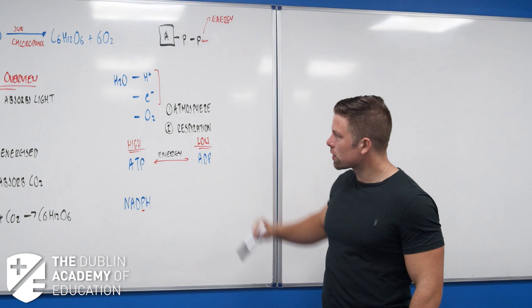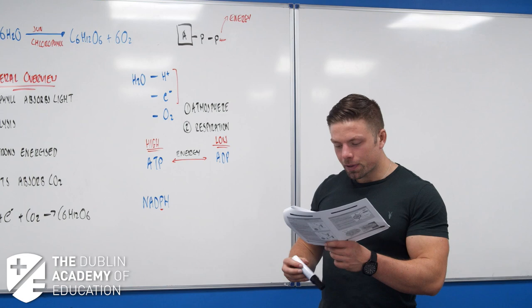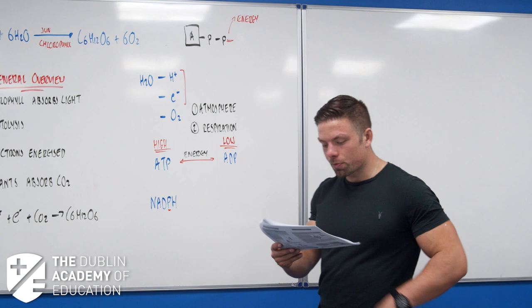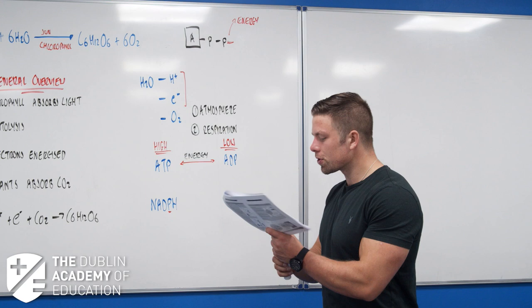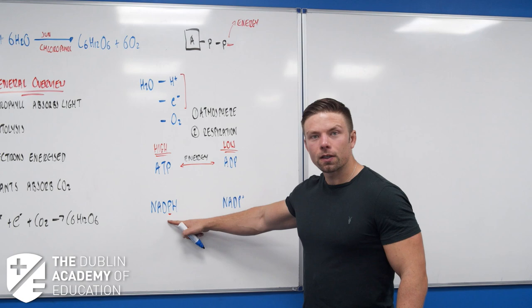NADPH carries protons and electrons. Those protons and electrons are going to be used later when we talk about photosynthesis in more detail. NADP+ is the low energy molecule and NADPH is the high energy molecule. Don't get worried about balancing equations or electrons and protons - they won't ask you how it works.